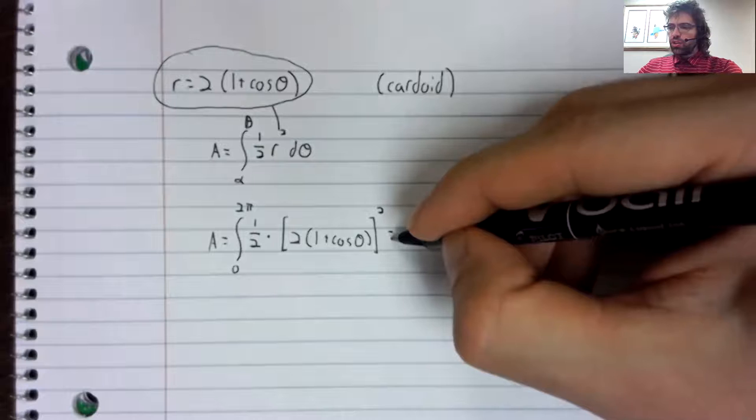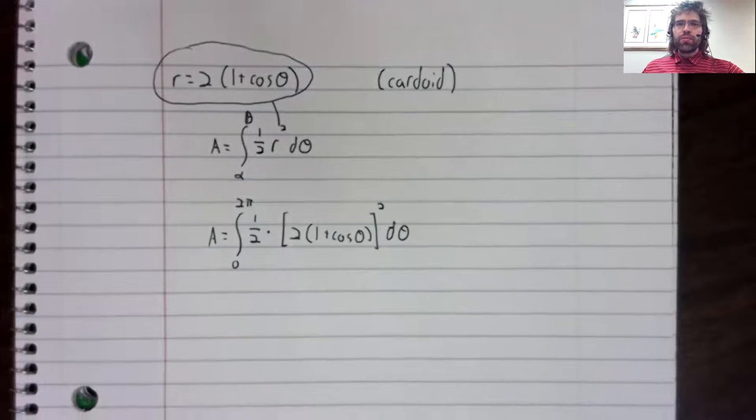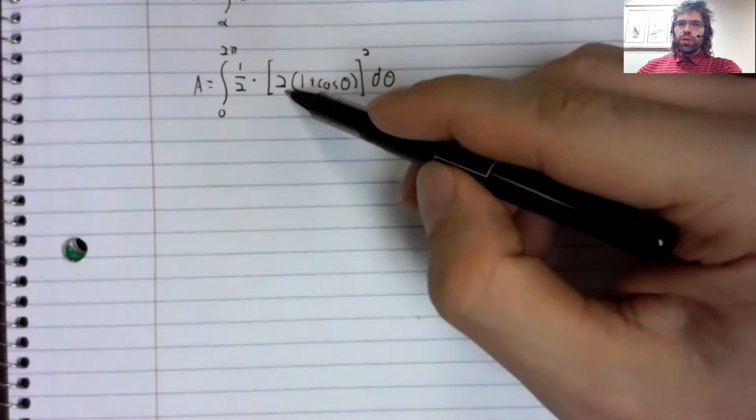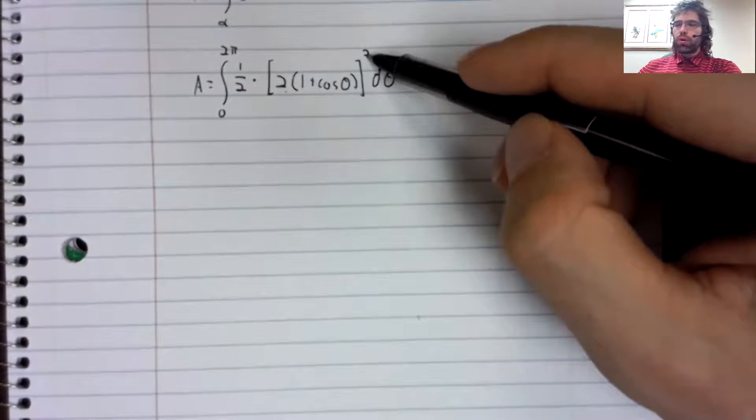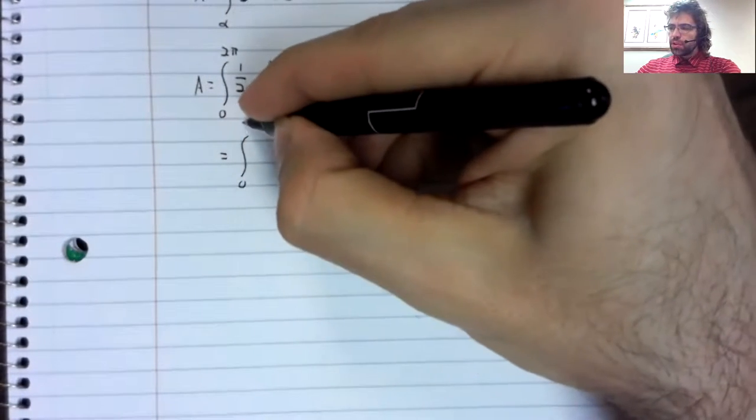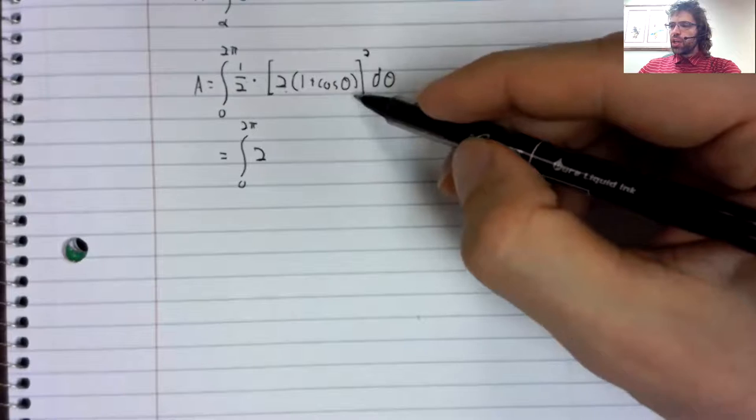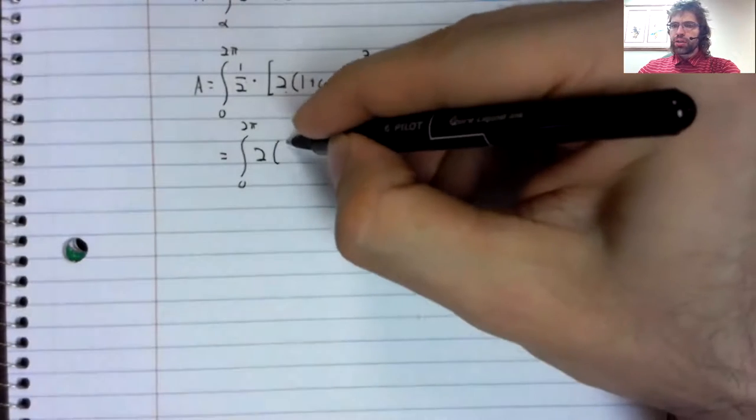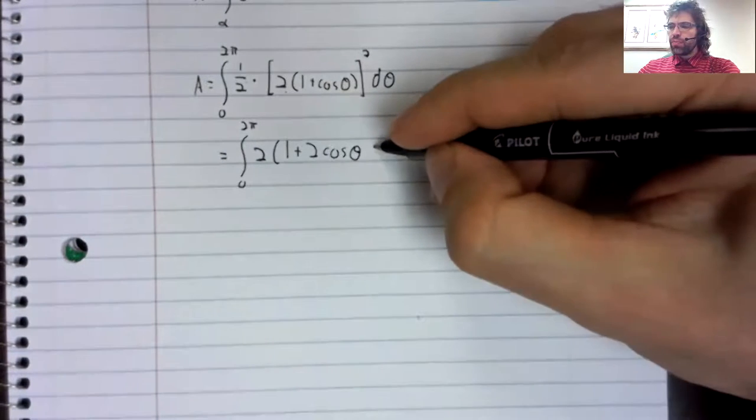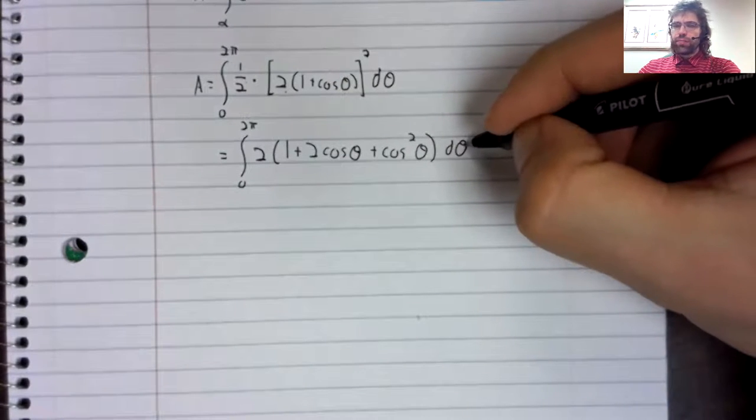Here's the integral we get. And now it's just a matter of whether or not we can evaluate this thing. Two squared is four times one half. That will give us a two. One plus the cosine squared is one plus two times the cosine of theta plus the cosine squared of theta.